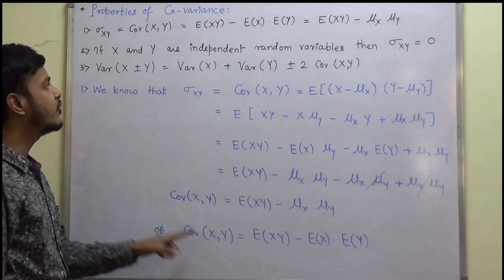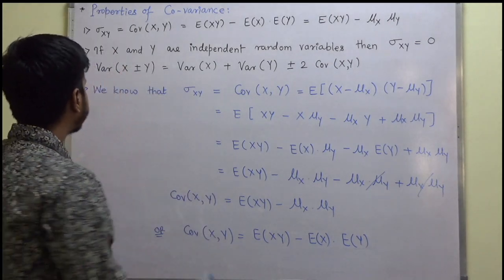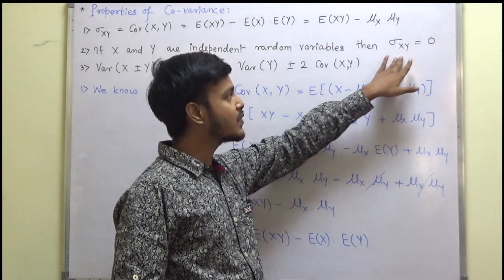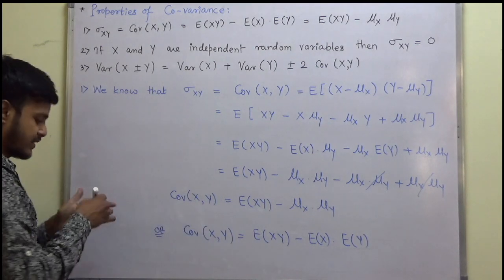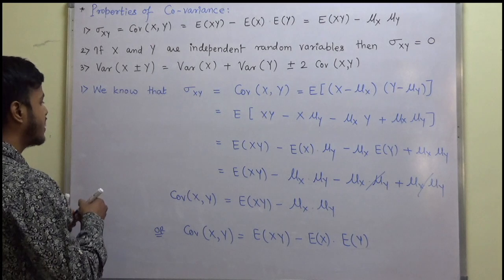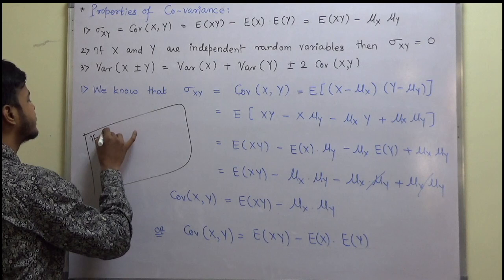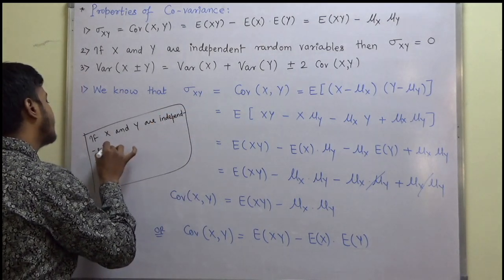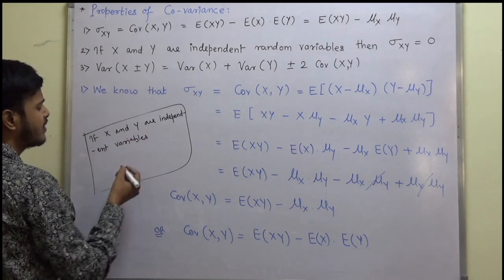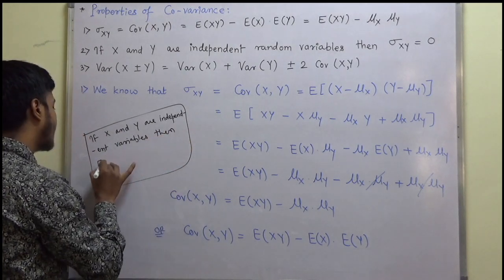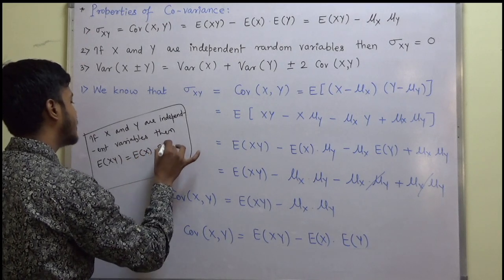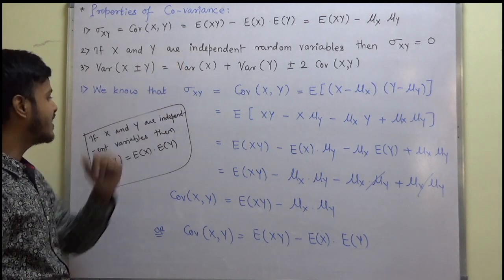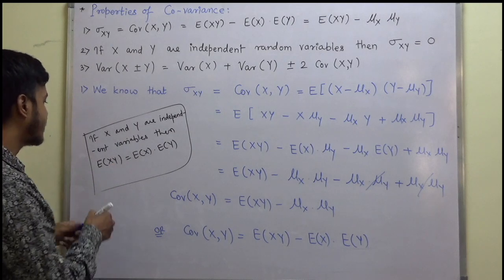Now if this is clear, we can go for the second property. The second property states: if x and y are independent random variables, then the covariance of xy is zero. We make use of the first property result here. We know that if x and y are independent random variables, then E(xy) = E(x)·E(y). We have already seen this in earlier classes.